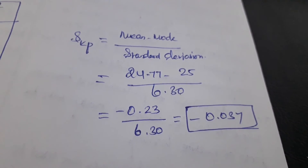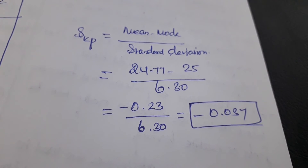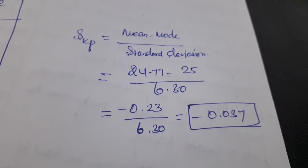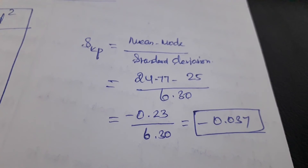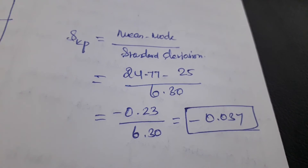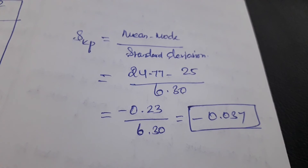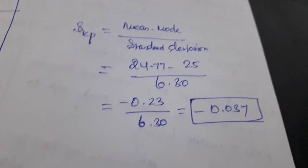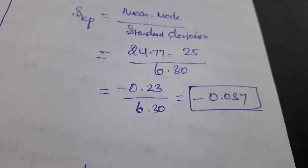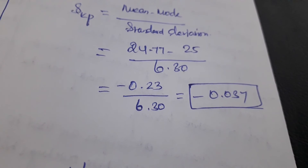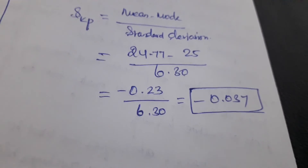Sometimes we cannot find the mode, so we apply the formula: SKp = 3 × (mean minus median) divided by standard deviation. We know the values of mean, mode, and standard deviation, so applying them gives us the Pearson's coefficient as −0.037, which is a negative value.